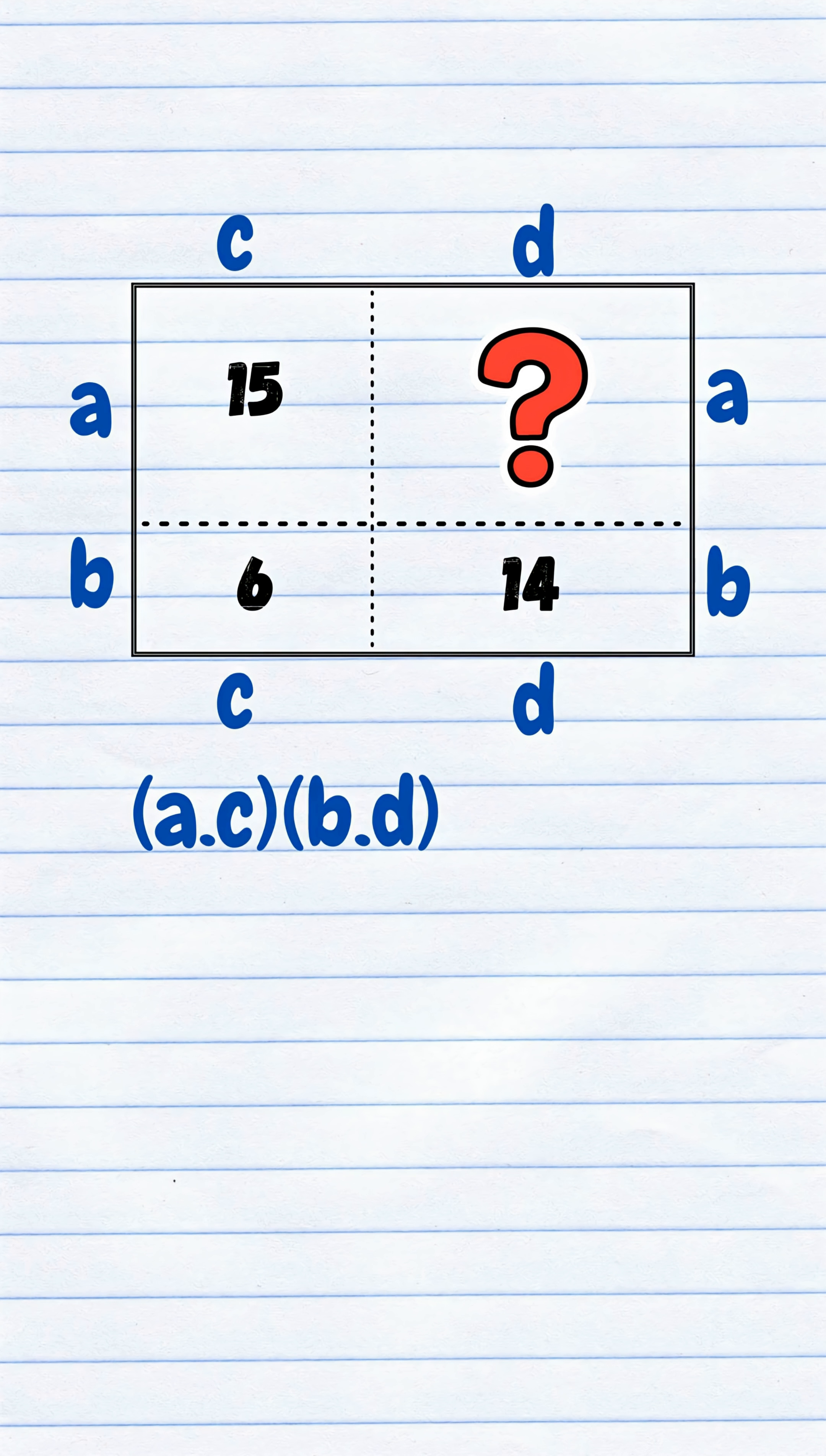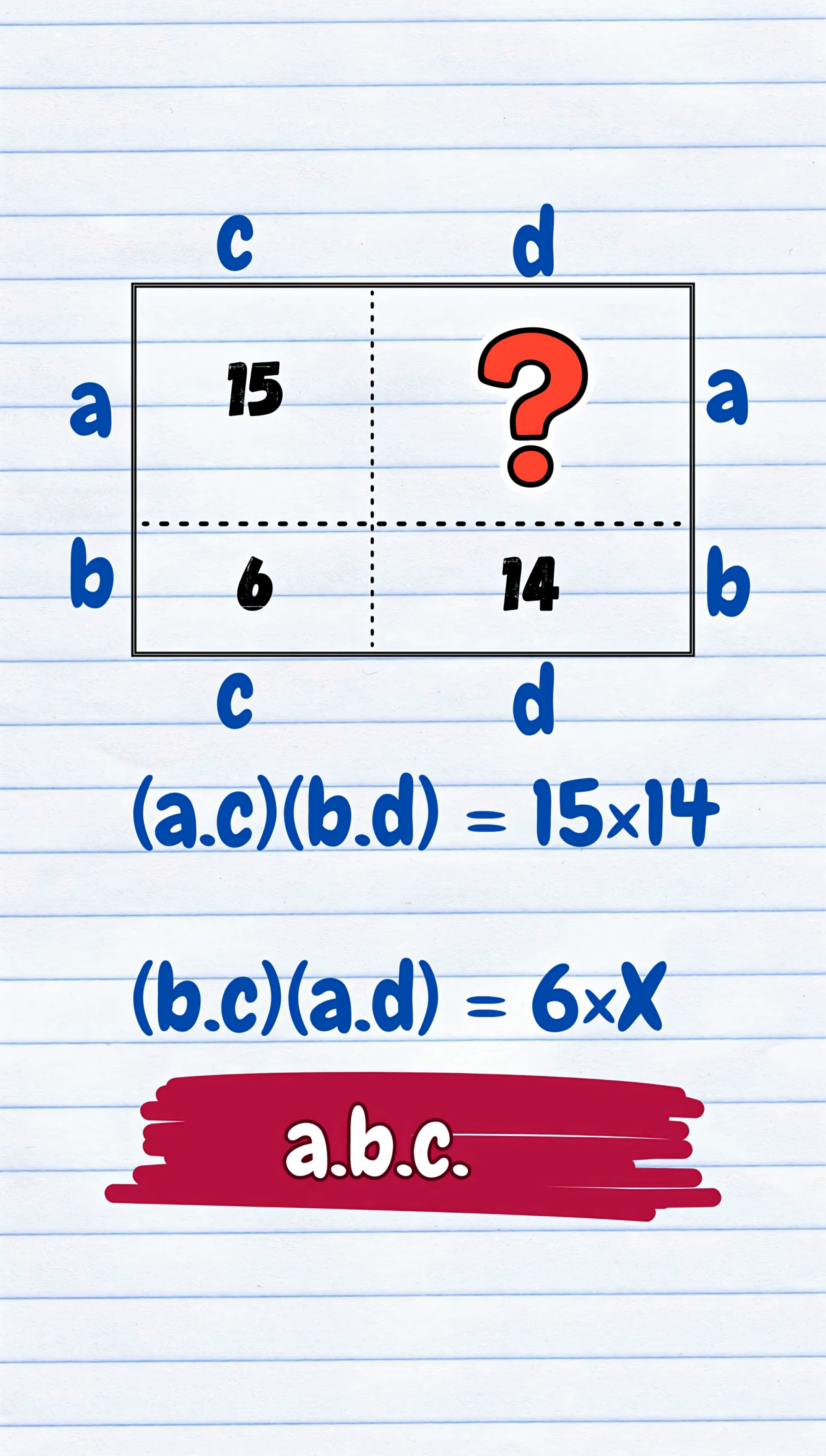Multiply diagonally. A times C times B times D equals 15 times 14. B times C times A times D equals 6 times X. Both sides secretly equal the same product. A times B times C times D.